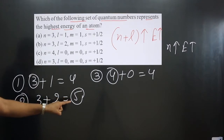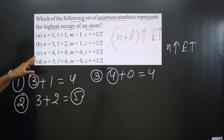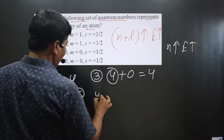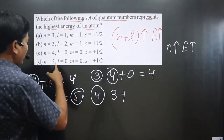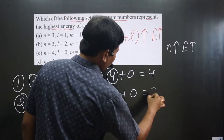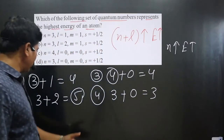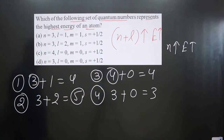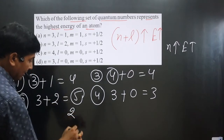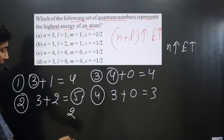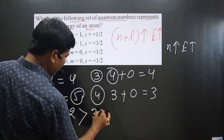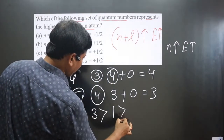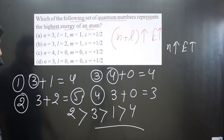Till now, the second set of quantum numbers has the highest energy. For the fourth option, n equals 3 and l equals 0, giving us 3, so it has the minimum energy. Arranging them: the second set has the highest energy, then the third set, then the first set, and the least energy belongs to the fourth set.